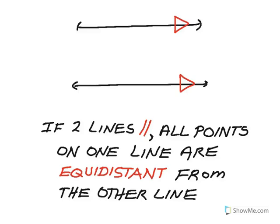I think of this like train tracks with ties going across them. If I have two parallel train tracks, I expect all of the ties to be the same length — those are the wood pieces that go between them. If I take any point on one line and go the shortest distance to the other line, which is always a perpendicular, that length is going to be the same as from any other point. The distances between the two lines remains constant.